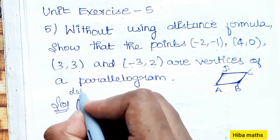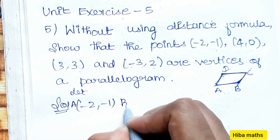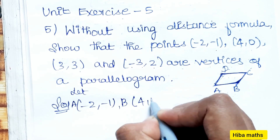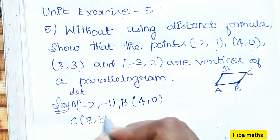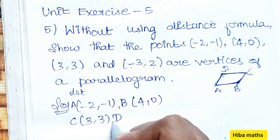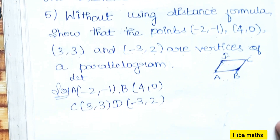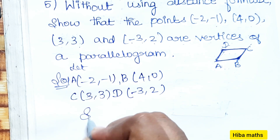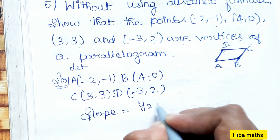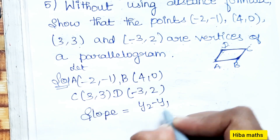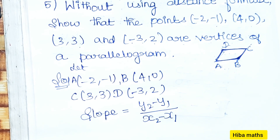Let A = (-2, -1), B = (4, 0), C = (3, 3), D = (-3, 2). The slope formula is: slope = (y2 - y1) divided by (x2 - x1).